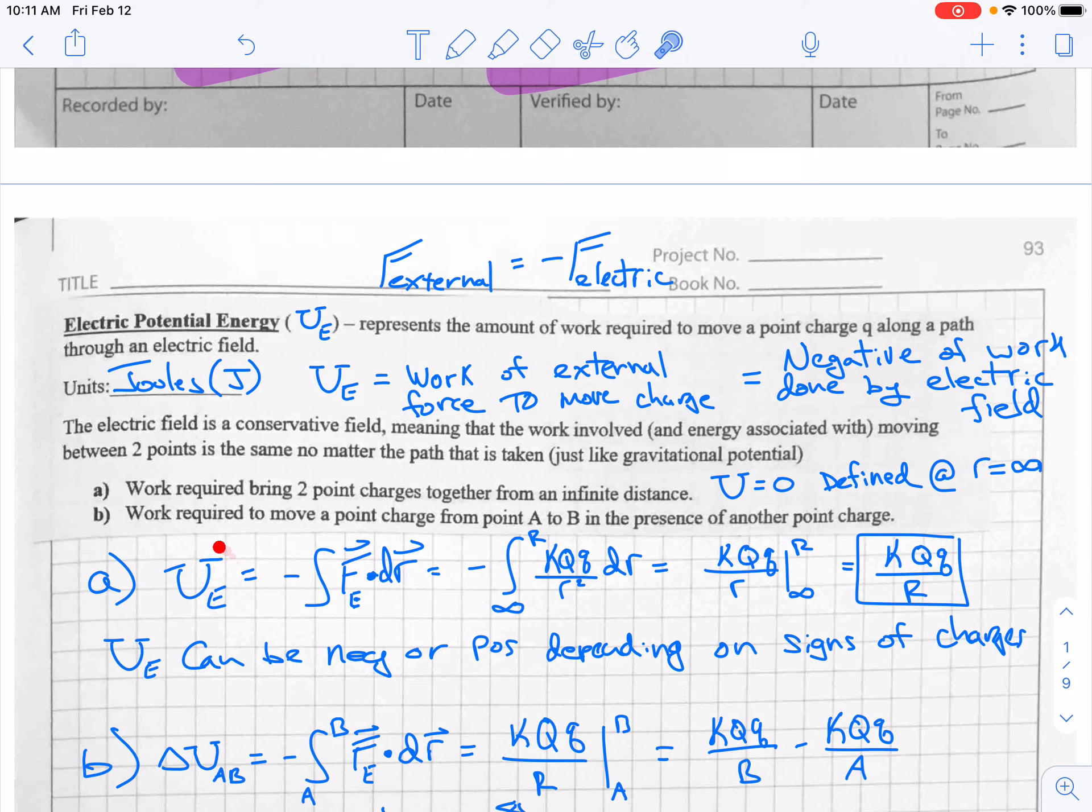And if we want the external work to bring together two point charges, it's the negative integral of FDR. This is like force times distance, which is work. And we're taking the negative because this would represent the force of the external source, the force that I need to put onto it to move it from one point to another, whether I push or pull. But the amount that I push or pull is in the opposite direction of the electric force and it's of the same magnitude.